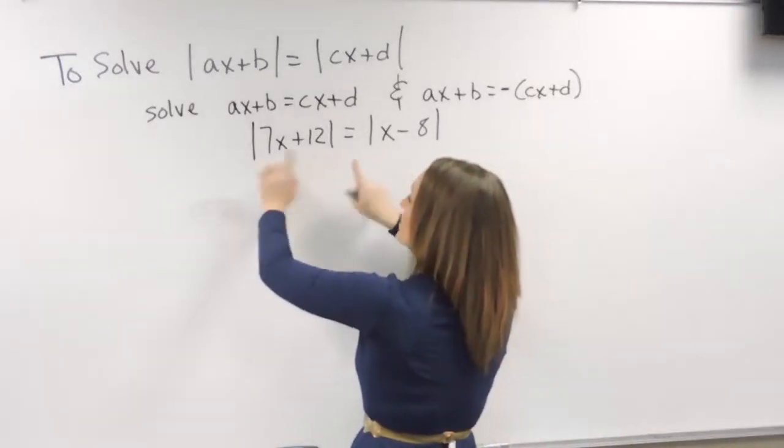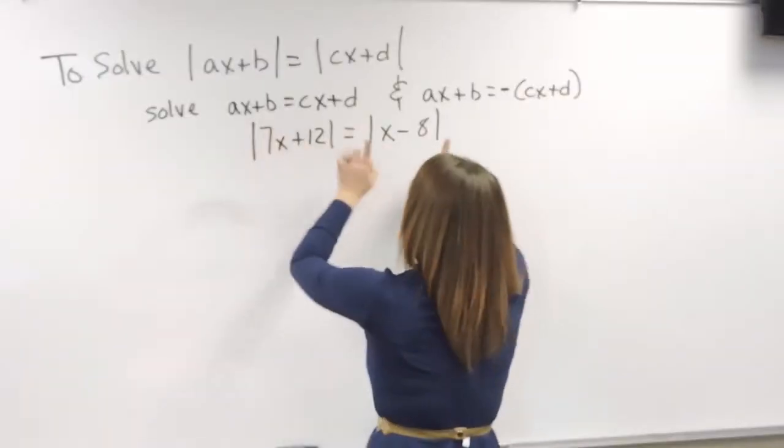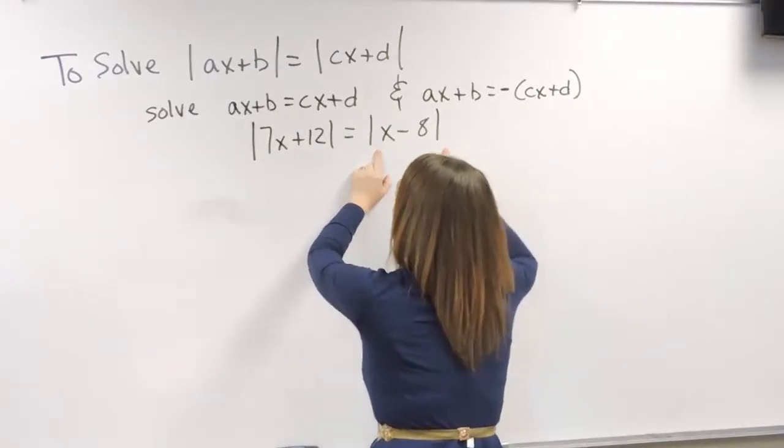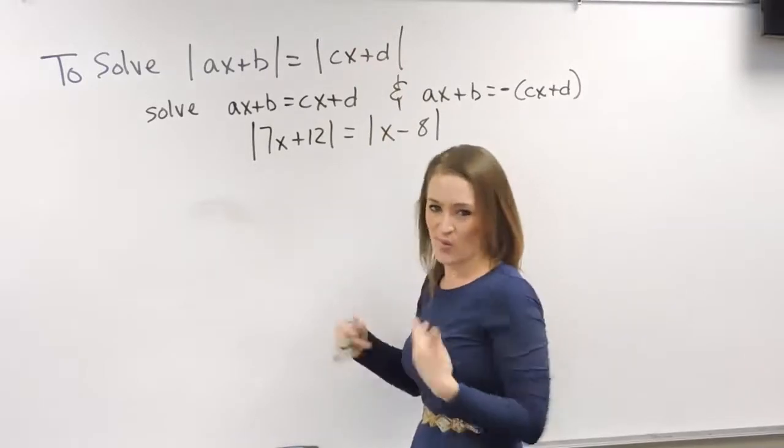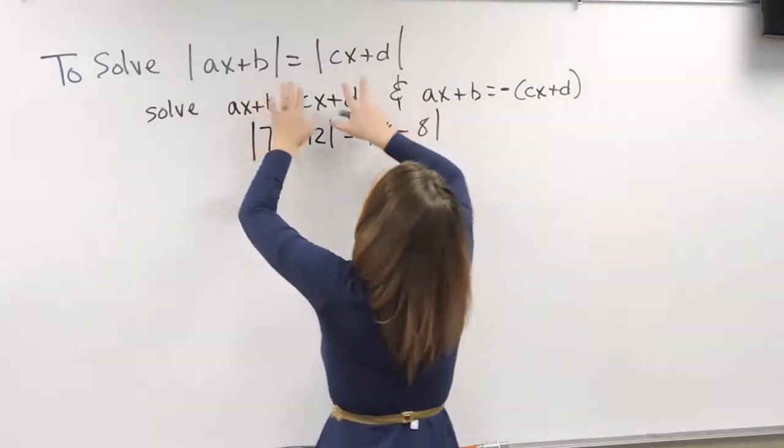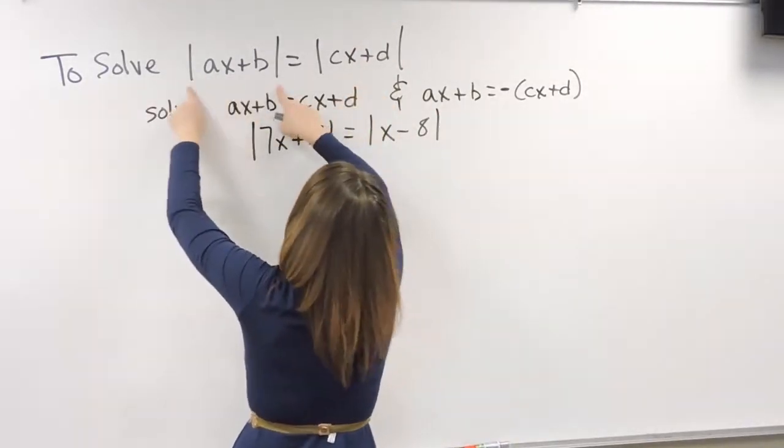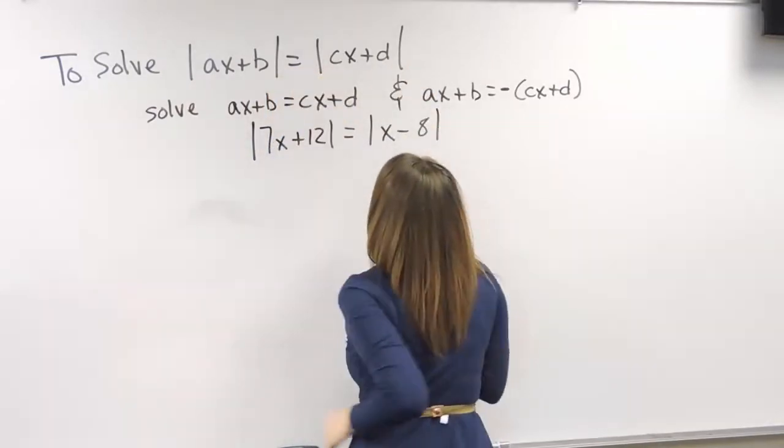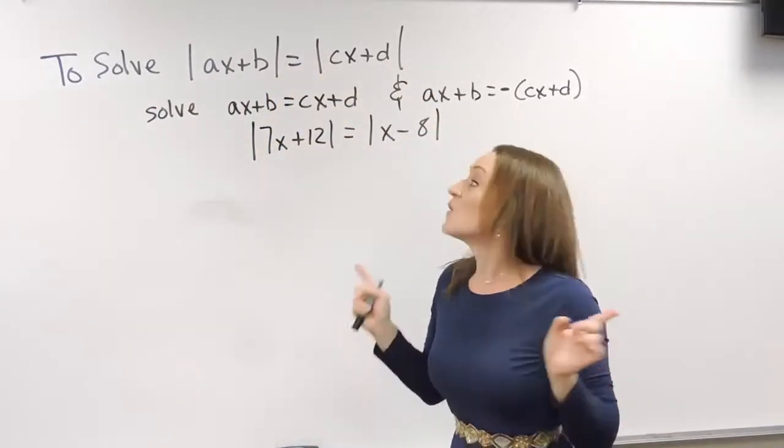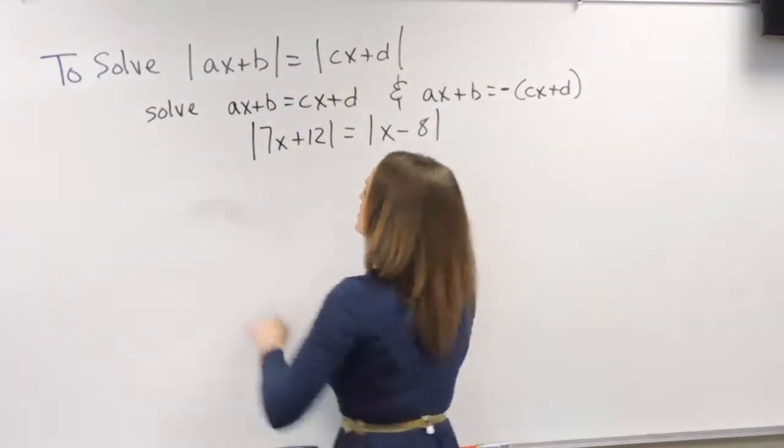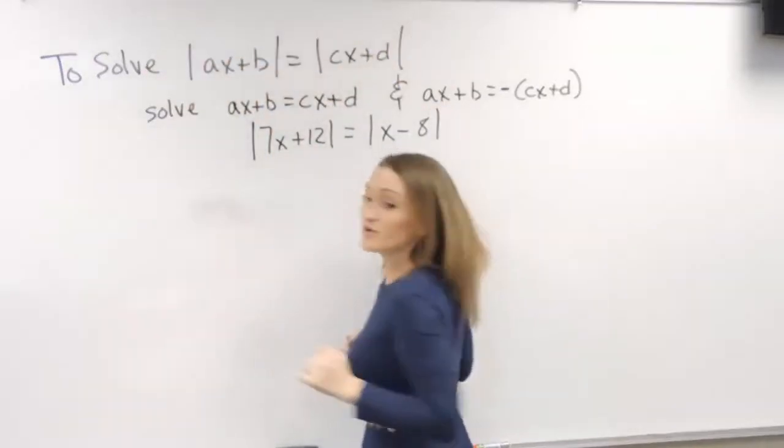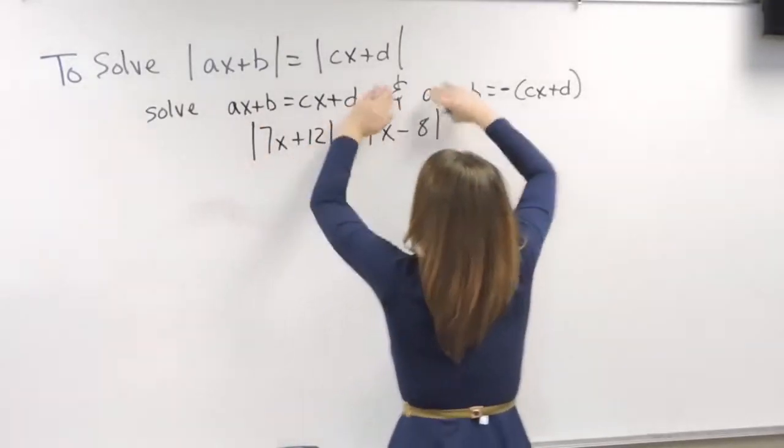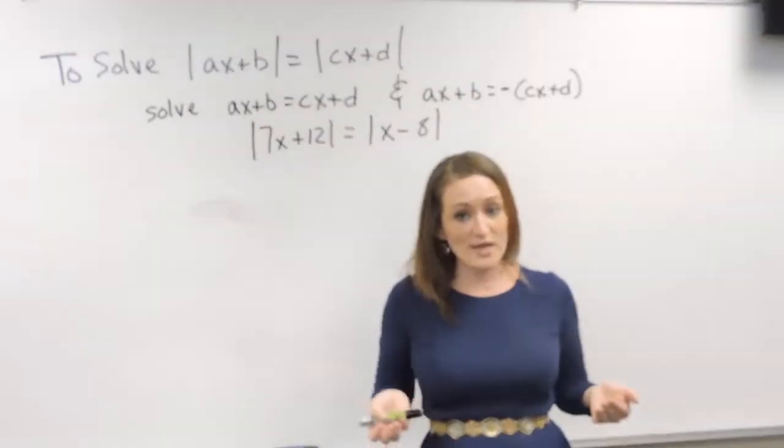So for this particular example, we have an absolute value set equal to an absolute value. And right up here, I have the rules that tells us how do we work this out. So if we're solving an absolute value equals an absolute value, this is what we do. We solve two different equations. The first equation is what the normal equation looks like minus the absolute value bar. So literally just strip those bars away and solve that equation.